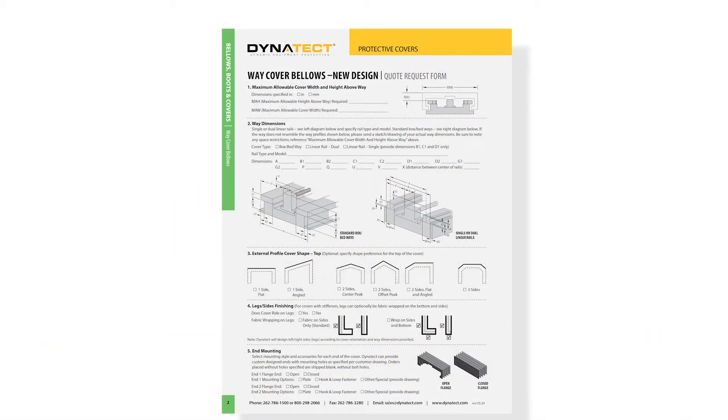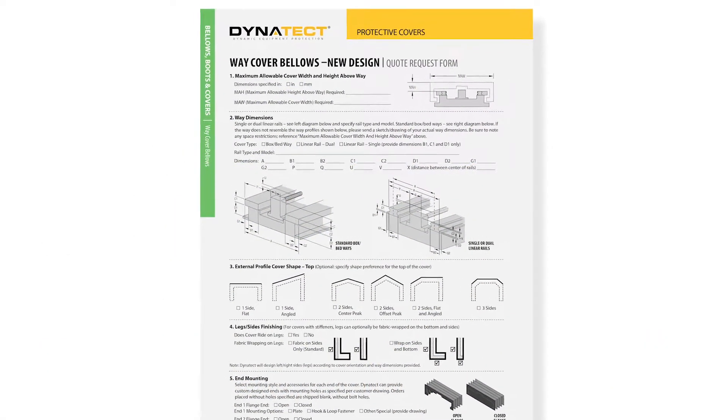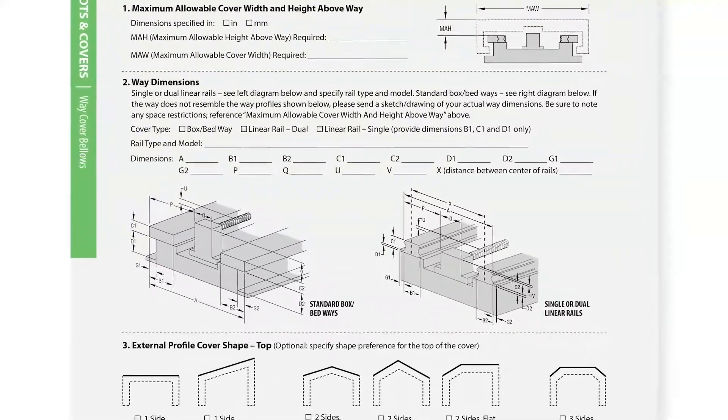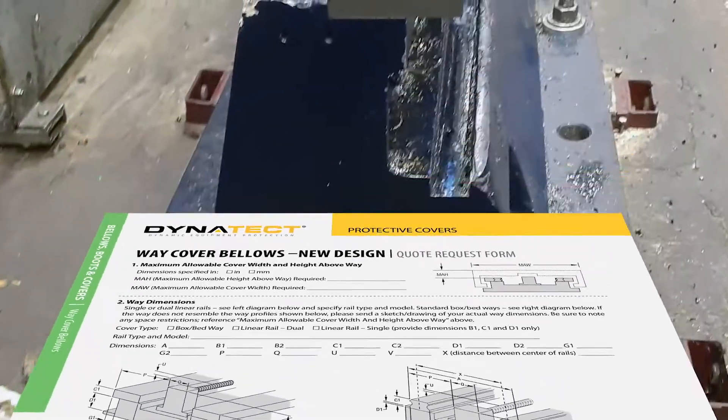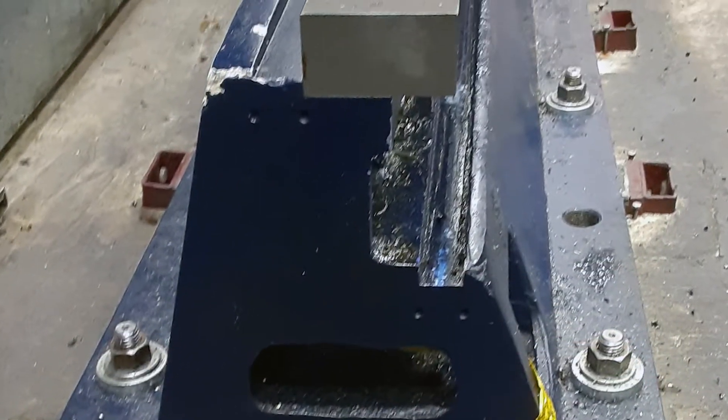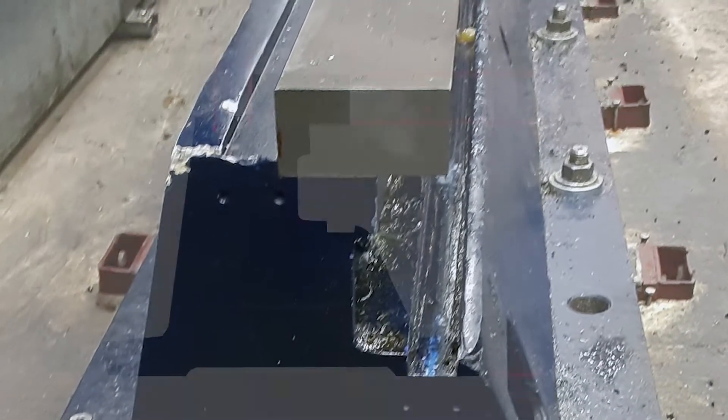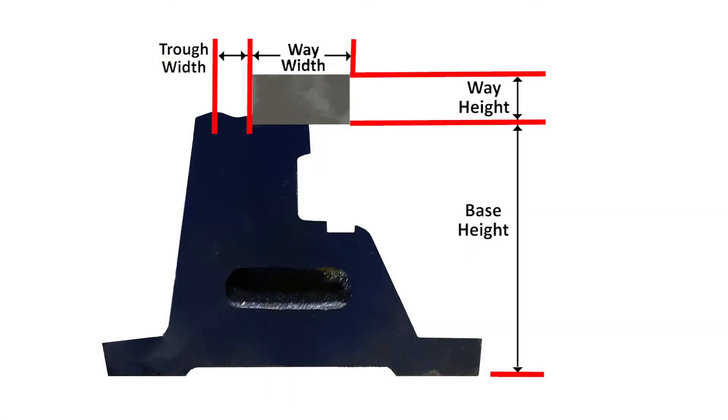On page 2, section 2 defines critical dimensions for covering dual box ways or linear rails. Your machine way may be different from the examples shown, but you can send a drawing or sketch of your actual way dimensions.